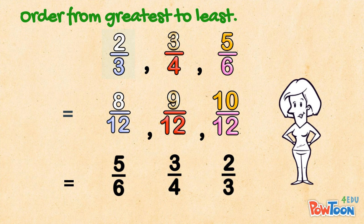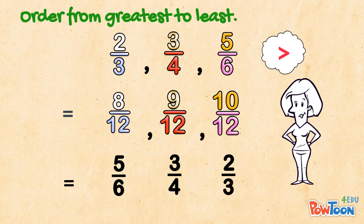And in our last step, we use the greater than sign with the original fractions. 5 sixths is greater than 3 quarters, which is greater than 2 thirds.